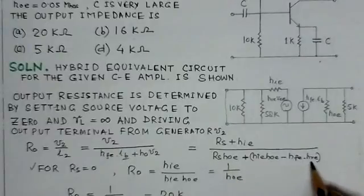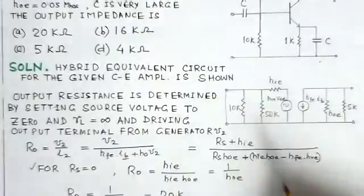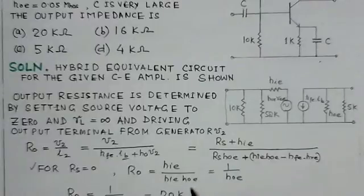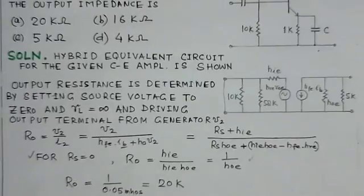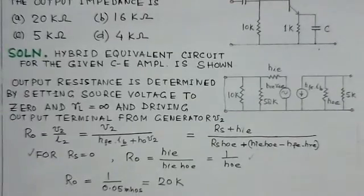So 1 over HIE HOE is the impedance, the output impedance of the transistor.